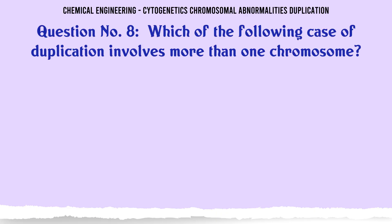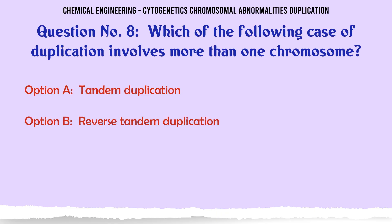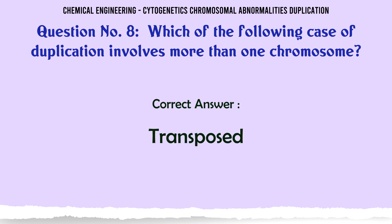Which of the following cases of duplication involves more than one chromosome? A: tandem duplication. B: reverse tandem duplication. C: displaced. D: transposed. The correct answer is transposed.